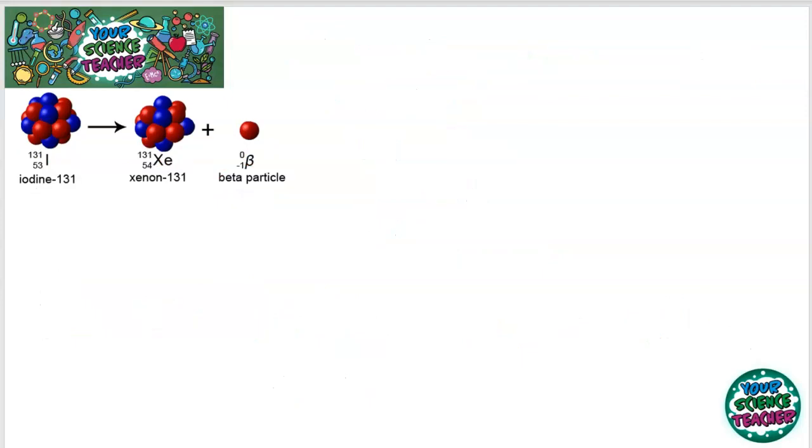The next emission we're going to look at is beta emission. Let's look at the trend that's going up on here. This time, we're not going down in proton number. Look, we're actually going up in proton number. So in beta emission, the proton number goes up. And basically what happens in beta emission is a neutron is converted into a proton. And that causes a beta particle to be released.